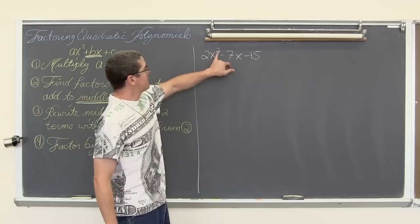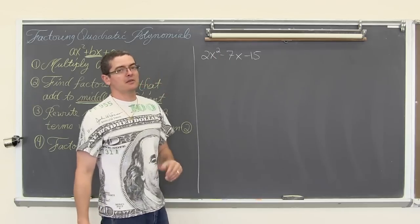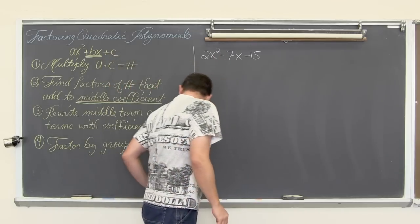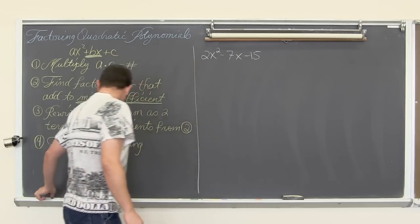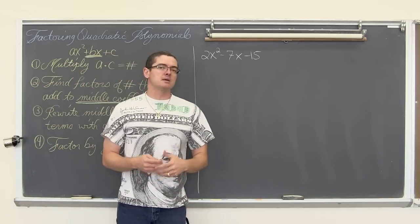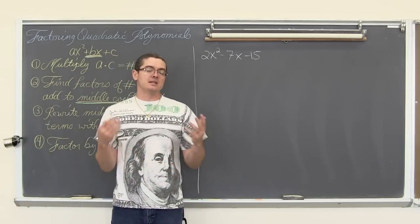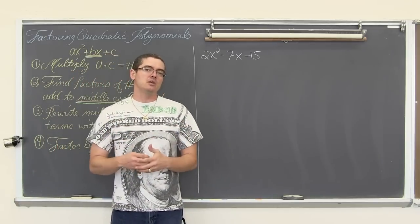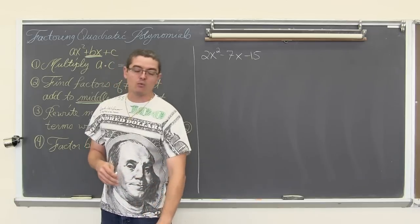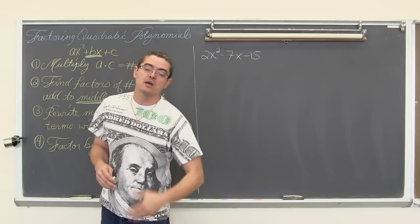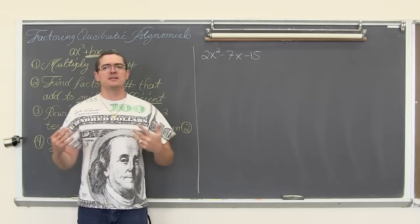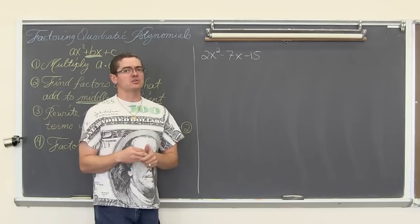Then we are going to factor by grouping. When we are done, if our quadratic trinomials are factorable, we will have an answer. Remember, you are learning all these factoring processes initially because you are going to use them to solve equations — to find where functions cross the x-axis, find the roots, find the zeros, find the solutions.